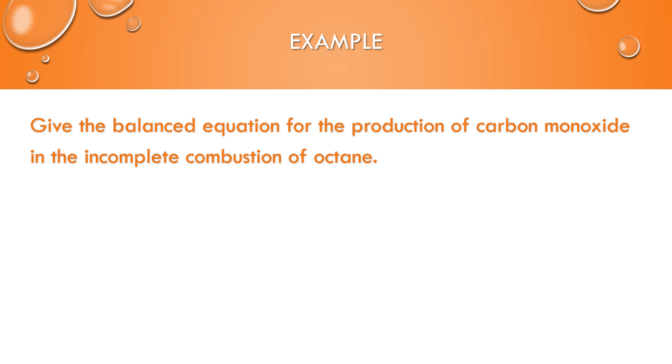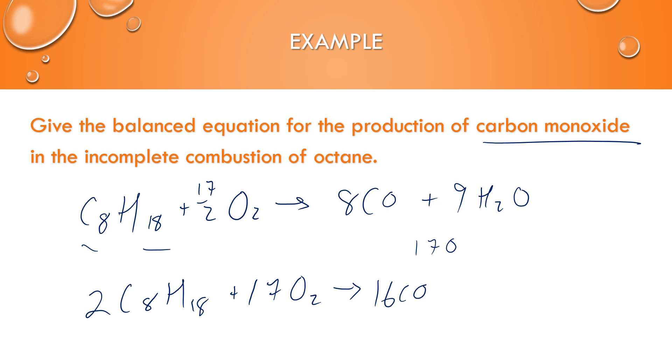Now it wants to give the balanced equation for the production of carbon monoxide in the incomplete combustion of octane, which is a major component of gasoline. So octane is C8H18, and it reacts with oxygen, production of carbon monoxide. And so when you're balancing this eight carbons, we need nine water molecules. And so now I have 17 oxygen atoms, so I can have 17 halves of an oxygen molecule. Or if I double it, C8H18 plus 17 oxygen molecules yields 16 carbon monoxides and 18 water molecules.